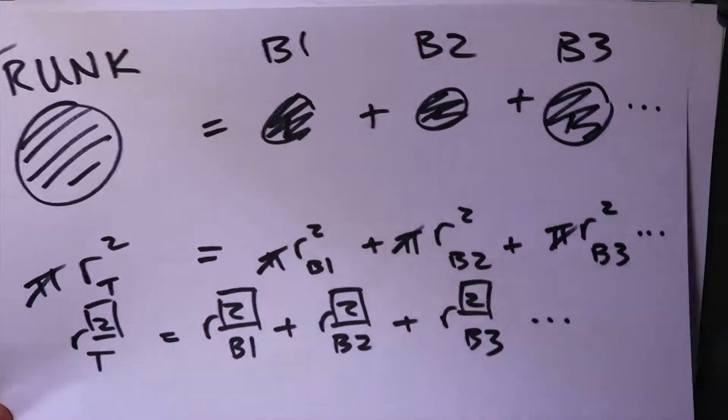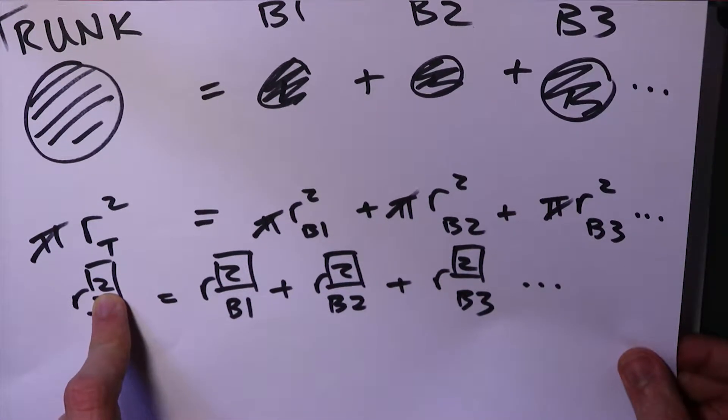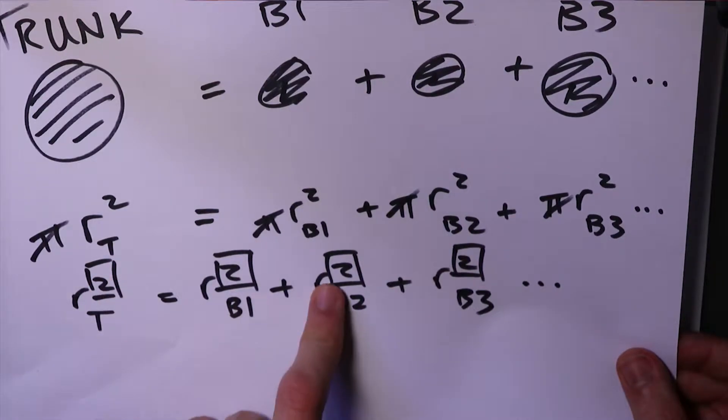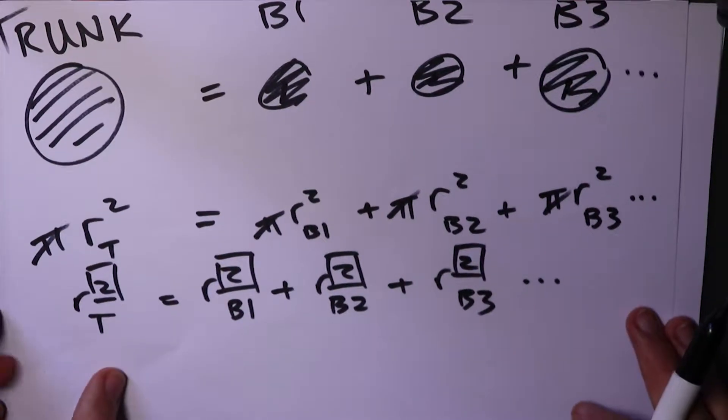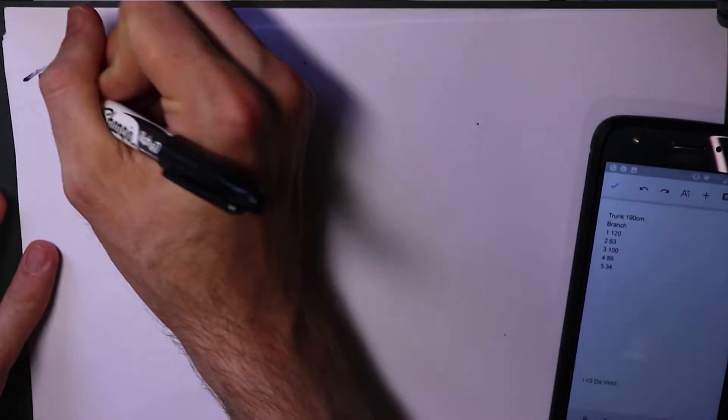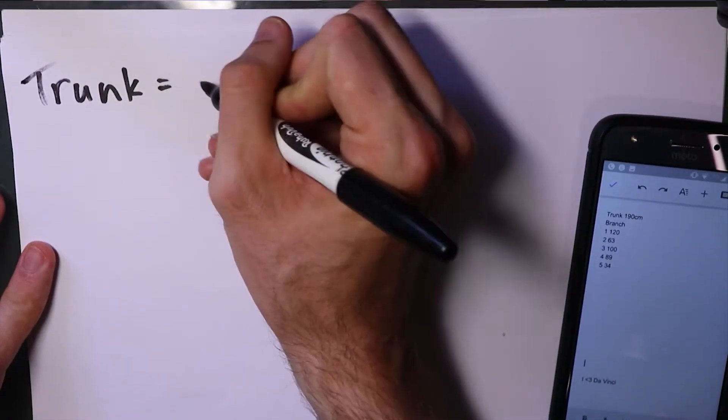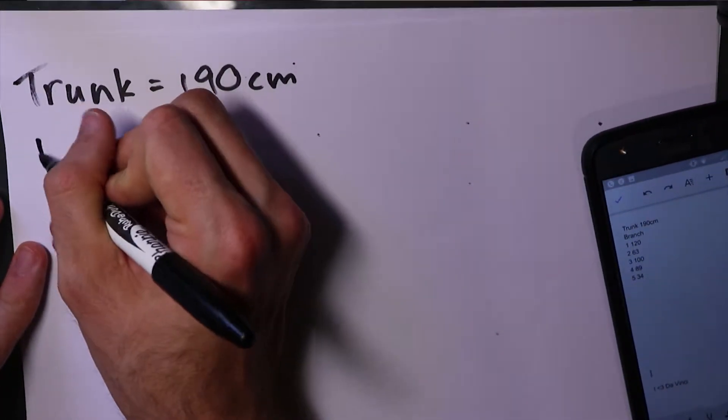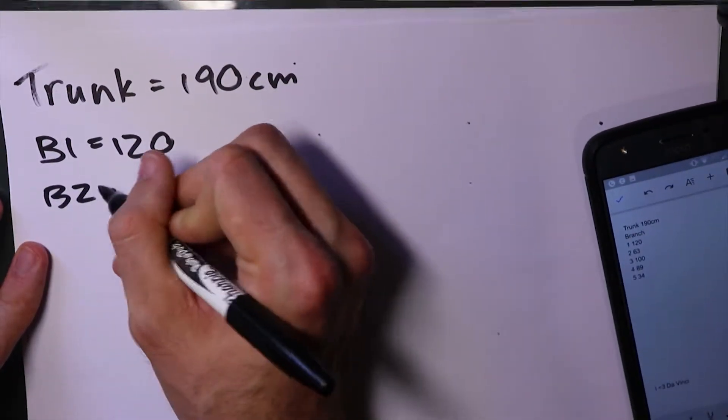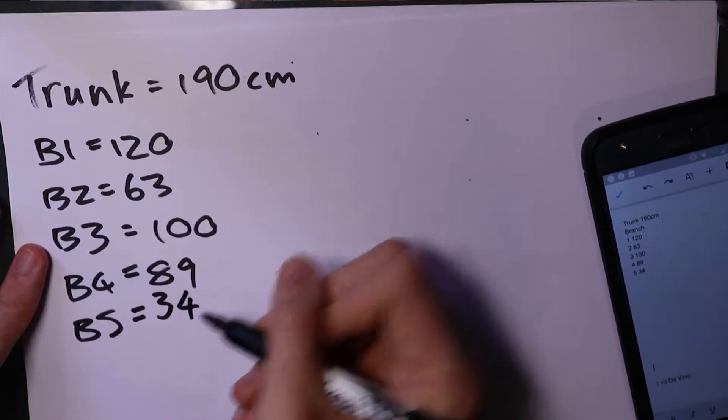So remember what we did here. We're just going to do the same thing but leave the Leonardo exponent as a variable. So rather than leaving it in as two, we're just going to have it as a variable. So first we've got the trunk is equal to 190 centimeters. And then we've got branch one.